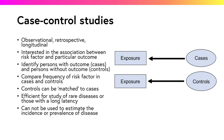Case control studies are observational and longitudinal, like cohort studies, but unlike cohort studies, they are retrospective. A group of subjects with the outcome or condition of interest are identified, along with a group of control subjects. Data is then collected on retrospective exposure and risk factor variables, in order to examine the association between risk factors and the outcome by comparing the frequency of risk factors in the case and control groups.